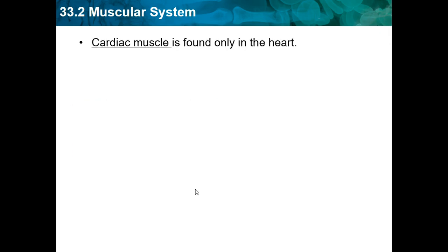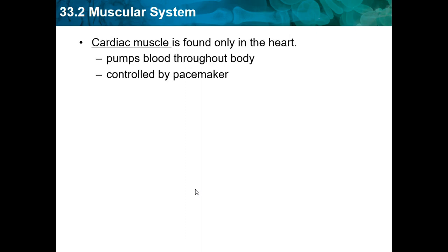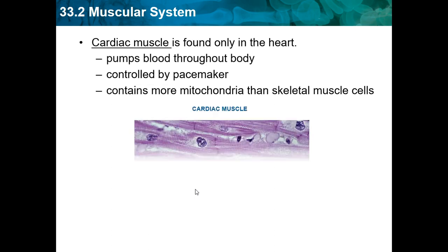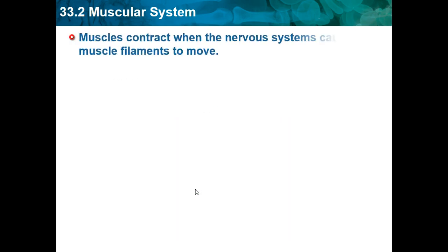Cardiac muscle is found only in the heart. It pumps blood through the body and is controlled by the pacemaker. Cardiac muscle contains more mitochondria than skeletal muscle cells. Since mitochondria produce ATP (energy), cardiac muscles must need a lot of energy.